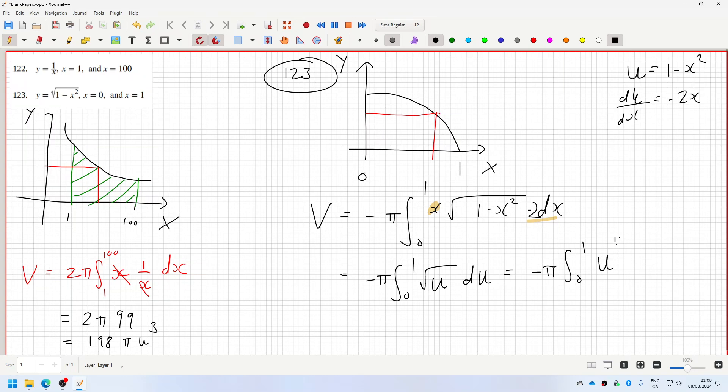And u to the power one-half du is minus pi u to the power three over two, over three over two, so that's minus two over three pi root one minus x squared cubed, from zero to one. Yeah, so the one would make zero.